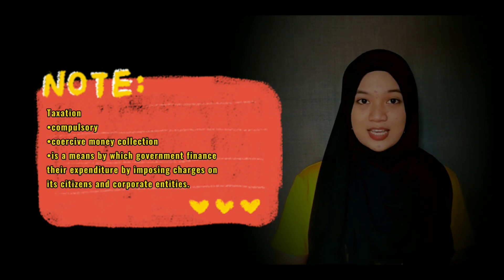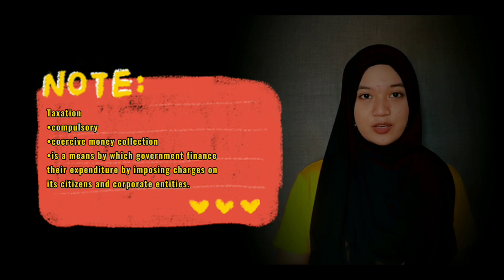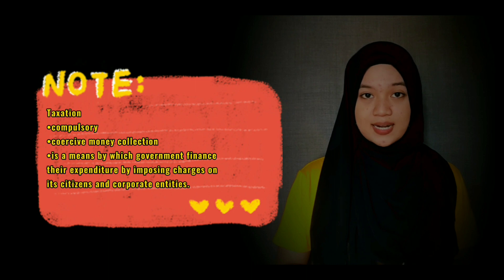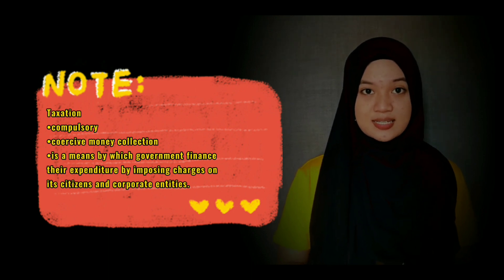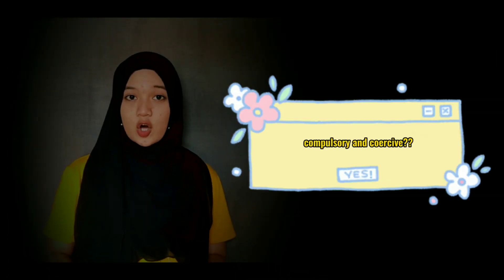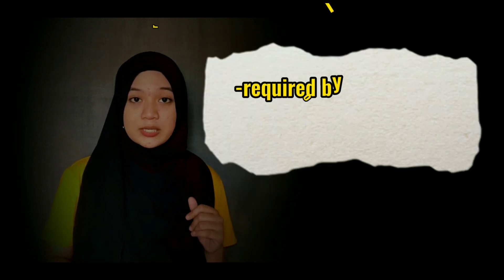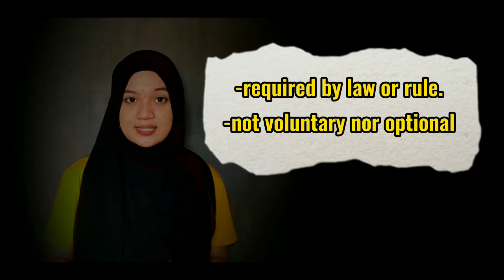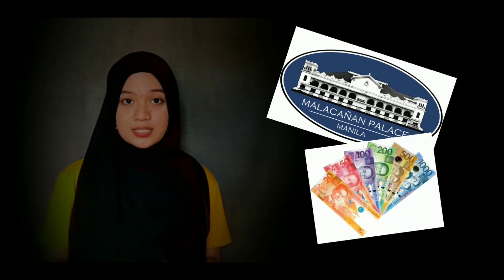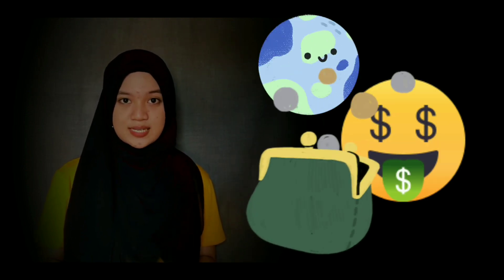What is taxation? Taxation refers to a compulsory or coercive money collection by a levying authority, usually a government. It is also a means by which governments finance their expenditure by imposing charges on its citizens and corporate entities. When we say compulsory or coercive, it is required by law or rule — it is not voluntary nor optional. In other words, taxation is the practice of a government collecting money from its citizens to pay for public services.